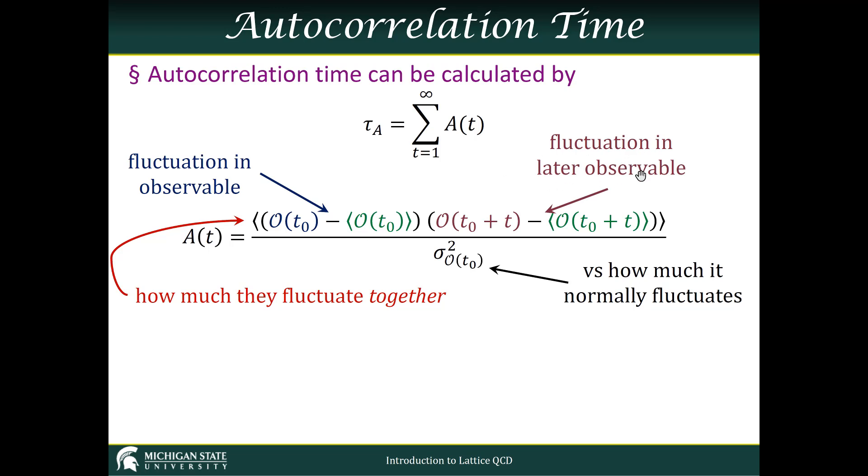Then we're going to compare that to the fluctuation in the observable at a different later Monte Carlo time. So t₀ + t, the observable at that compared to its mean.